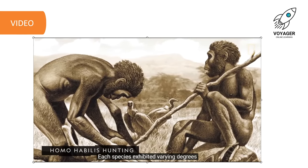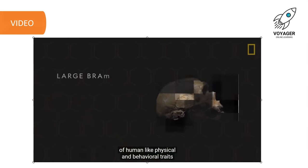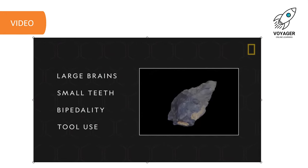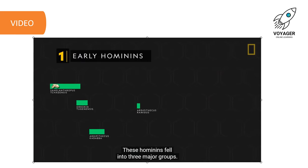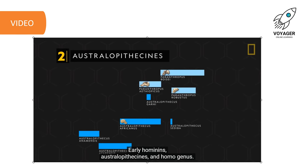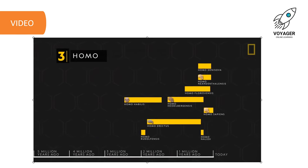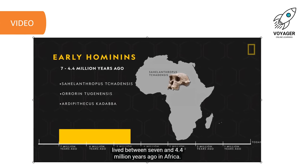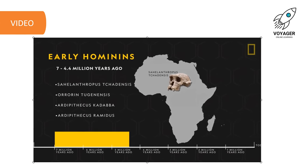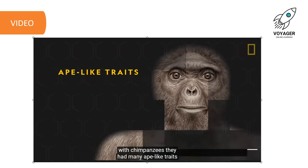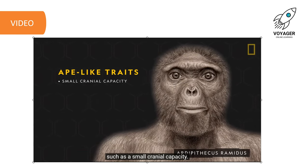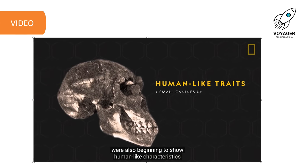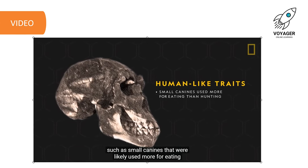Each species exhibited varying degrees of human-like physical and behavioral traits, such as large brains, small teeth, bipedality and tool use. These hominins fell into three major groups: early hominins, australopithecines and the homo-genus. Humanity's earliest relatives lived between 7 and 4.4 million years ago in Africa. Having recently shared a common ancestor with chimpanzees, they had many ape-like traits such as small cranial capacity, though fossils show some ancient hominins were developing small canines likely used more for eating than hunting.